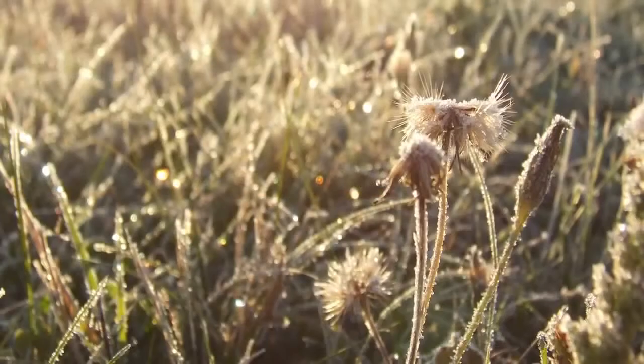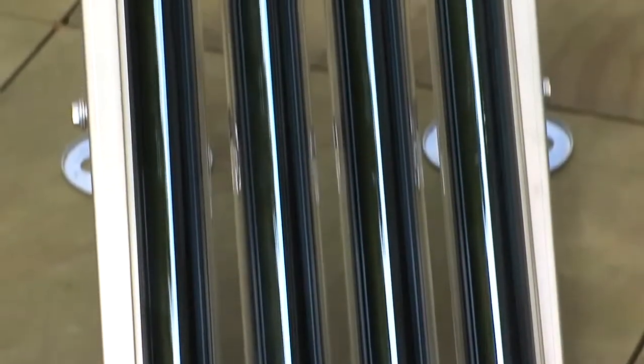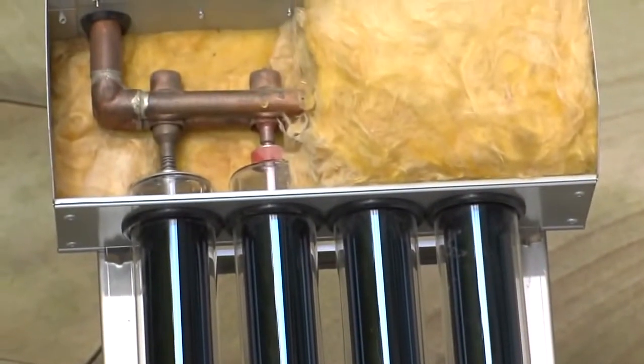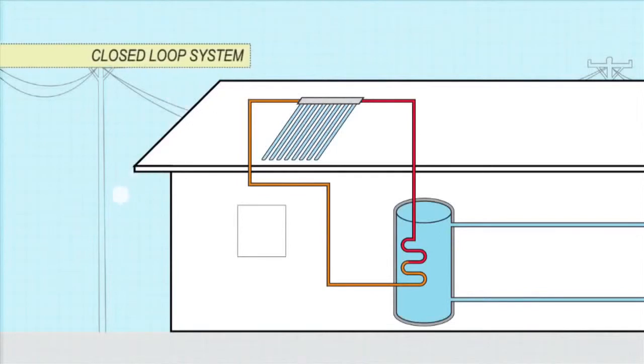In places with minor frosts, evacuated tubes may offer enough inbuilt protection. In climates with regular frosts, indirect or closed loop systems are the most popular and reliable form of frost protection.